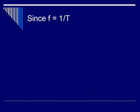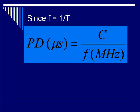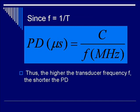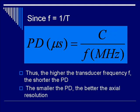Since the frequency is the inverse of the period, pulse duration can be defined as c, the number of pulses, divided by the frequency. Therefore, the higher the transducer frequency f, the shorter the pulse duration. And the smaller the pulse duration, the better is the axial resolution.